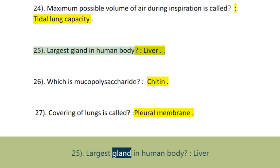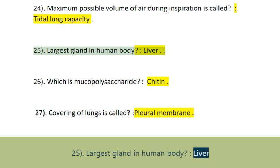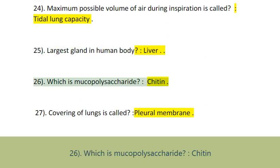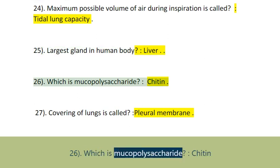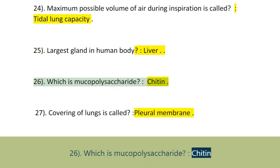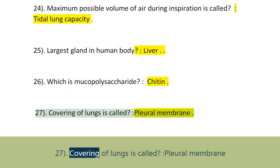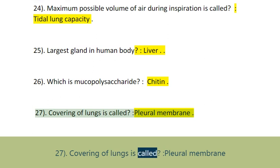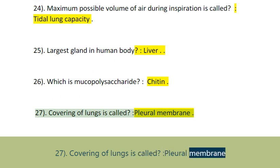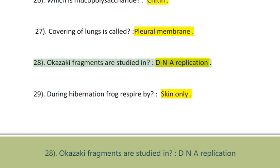Question 25: The largest gland in the human body is the Liver. Question 26: Which is a mucopolysaccharide? Chitin. Question 27: The covering of the lungs is called the pleural membrane.